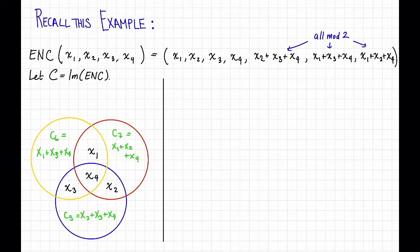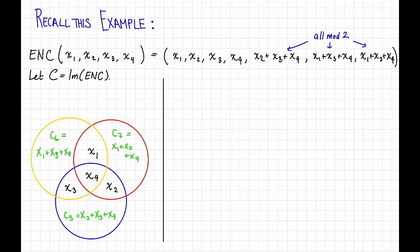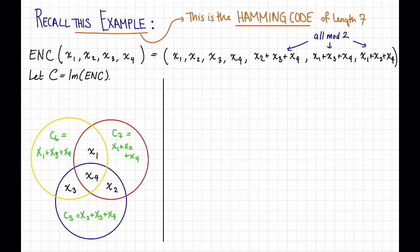We also saw in a previous video a nice way of looking at this code using circles, where we put the message bits in the middle and the parity check bits showed up there. This example has a name — it's called the Hamming code, or a Hamming code. From now on, instead of calling it example 3, I'm going to refer to it as the Hamming code of length 7.